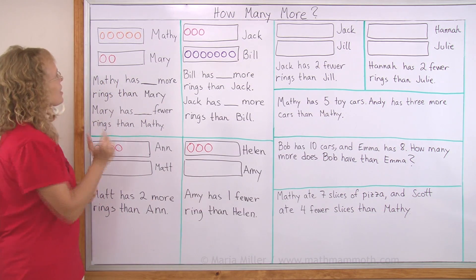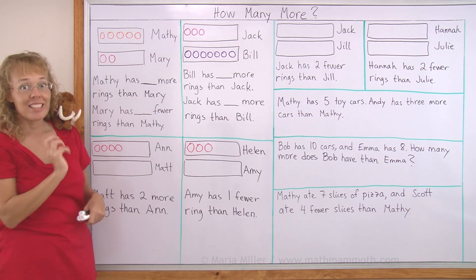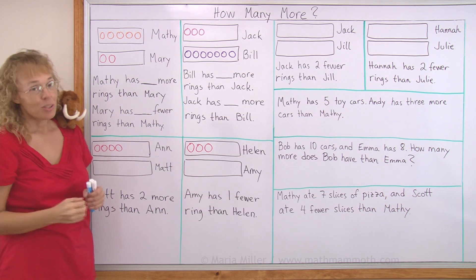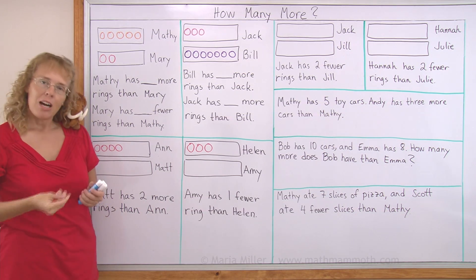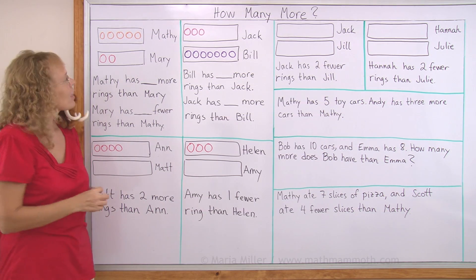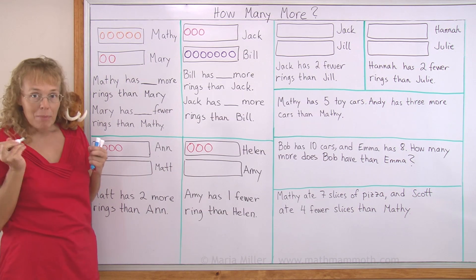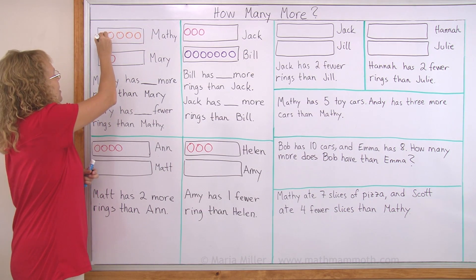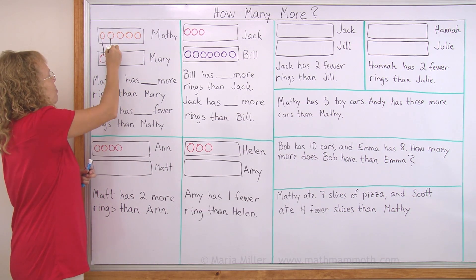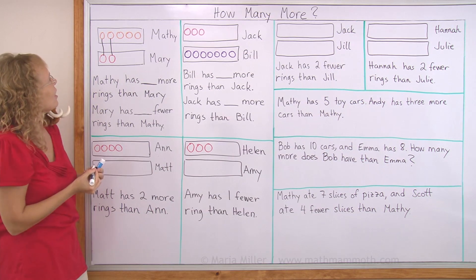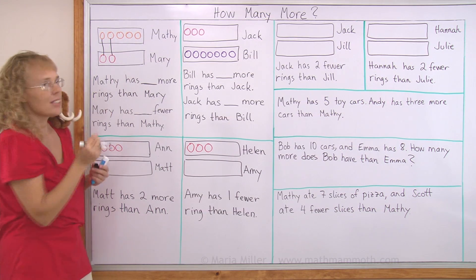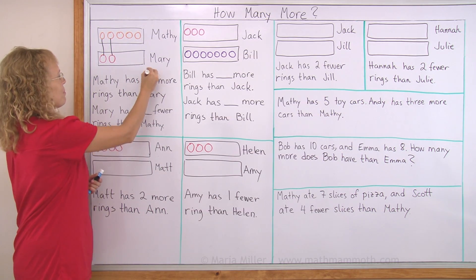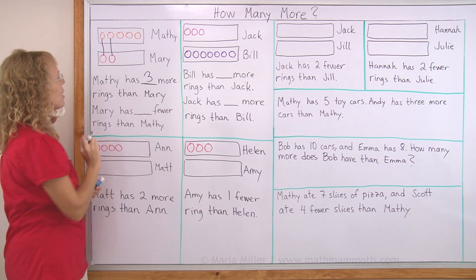Let's look at this example where Matthew has five rings and Mary has two rings. So Matthew has more, but how many more? Let's match Matthew's and Mary's rings like this. This matches this, this matches that. Now we can see Matthew has exactly three more rings than Mary.